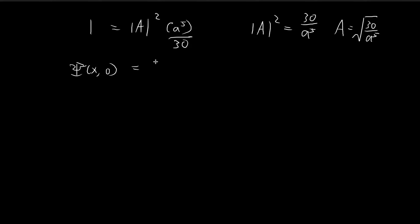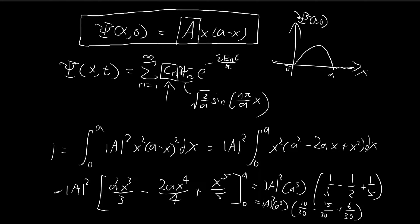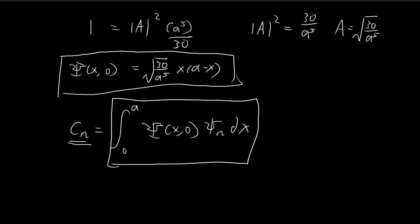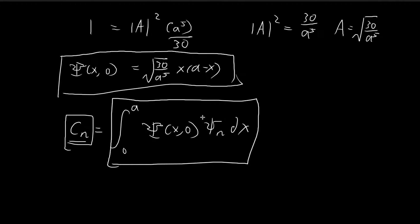Now we know our normalized wave function looks like A times x(a minus x). This is our initial wave function. We would now like to find what c_n should be. As in earlier videos, using the fact that the xi_n's are mutually orthogonal for different subscripts, we know c_n can be found by integrating the initial wave function times xi_n dx. Once we've found c_n, we can substitute it back, giving the full time-dependent wave function for the particle in the infinite square well.